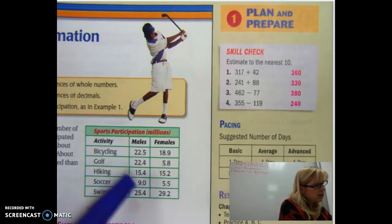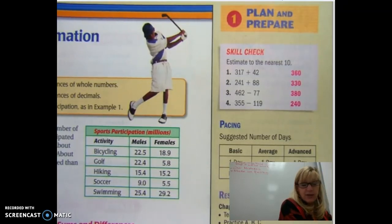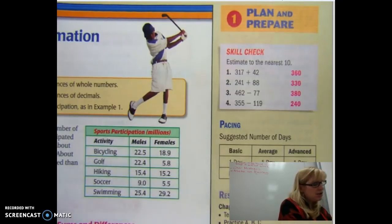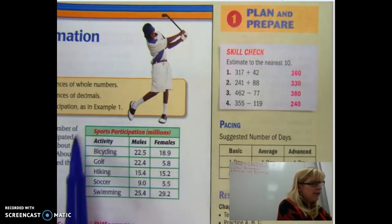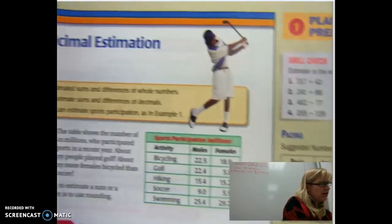Once you've done that, you should have gotten, they would both round down to 15. So 15 plus 15 would be 30. Now look at the graph. It says it's in millions. So this is 30 million people participate in hiking. So never forget to go back and check out what you are actually doing.